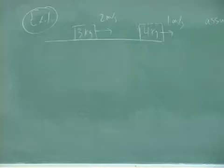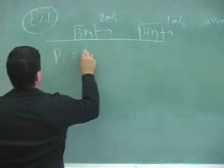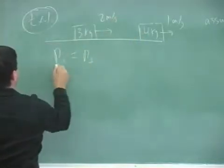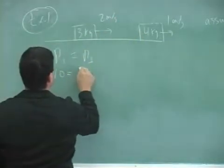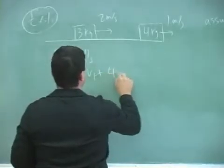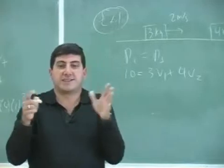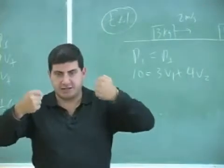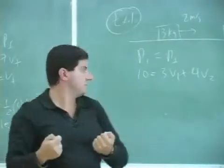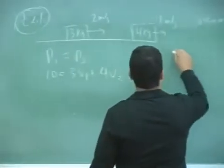For the elastic collision, we have initial momentum equals final momentum. So 6 plus 4 is 10 equals 3 times v1 plus 4 times v2. In the elastic case they're no longer stuck, so each one individually has a separate velocity: 3v1, 4v2. And then the kinetic energy is conserved.